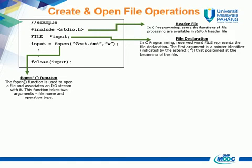Then, the fopen function. The fopen function is used to open a file and associates an I/O stream with it. This function takes two arguments: file name and operation type.